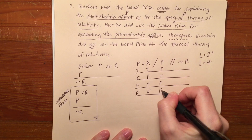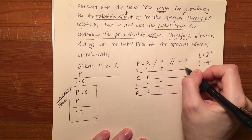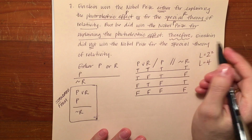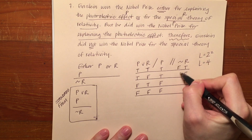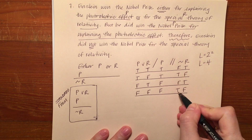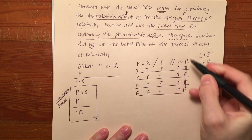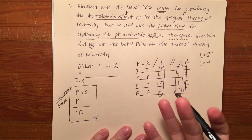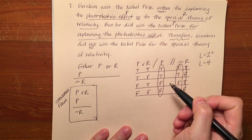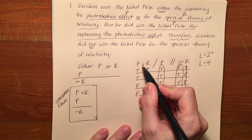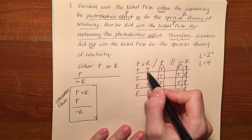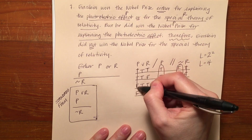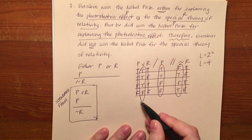Everywhere there's a P: true, true, false, false. Everywhere there's an R: true, false, true, false. I'm going to work the tilde first because it gets me the answer for my conclusion — that'll be false, true, false, true, since I'm just doing the opposite of R, negating R. That's my answer for the conclusion. The second premise is already just P — no additional work. For the wedge, the rule is it's only false if both are false — that's the last line — and the rest are true. So I quickly get my answer for the first premise.